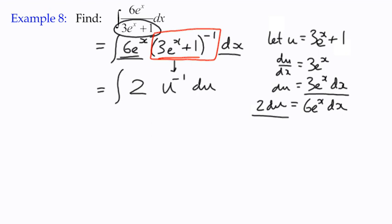So now our integral becomes the integral of 2u^(-1) du, which becomes... well, we can't use the power rule because we can't add one to get zero. Remember that the integral of u^(-1) is the natural log of |u| plus c.